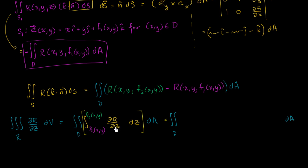So r of x, y, z evaluated when z equals that is r of x, y, f2 of x, y.